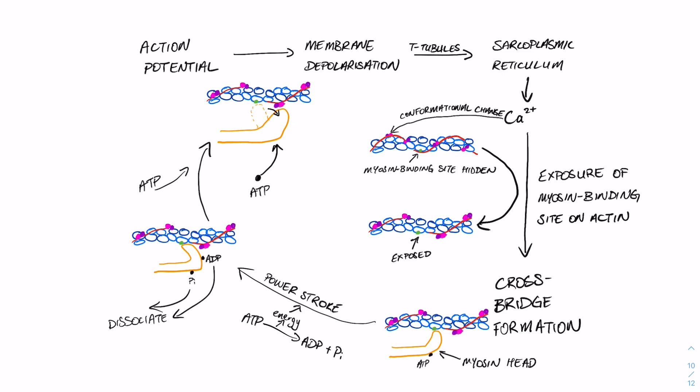And in that process, it's going to be released from the myosin binding site on actin. Now, what that means is with the ATP bound onto the myosin, ready to go in the cocked position in the high energy state, it will bind another actin where possible and basically form another cross bridge.